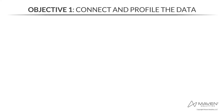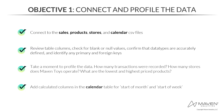Let's get started with our first core objective: connect and profile the data. This objective has four separate tasks. Our first task is to connect to the sales, product, store, and calendar CSV files. After that, we'll review the table columns, check for blank or null values, confirm that data types are accurate, and identify our primary and foreign keys.